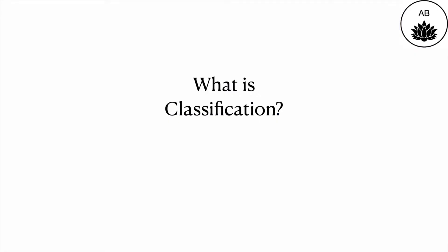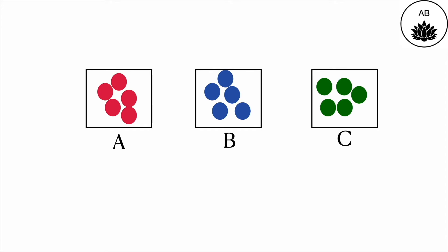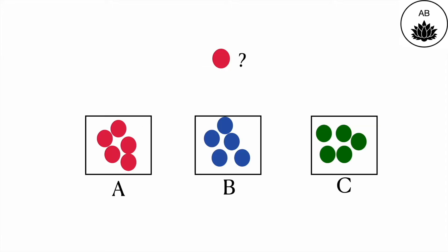What is classification? Let's say I have three boxes here which are filled with three differently colored balls or spheres, and these are classified into three separate classes A, B, C as per the colors. Now if I ask you, if you look at the sphere on top, to which class does this particular sphere belong to, you would immediately say class A.